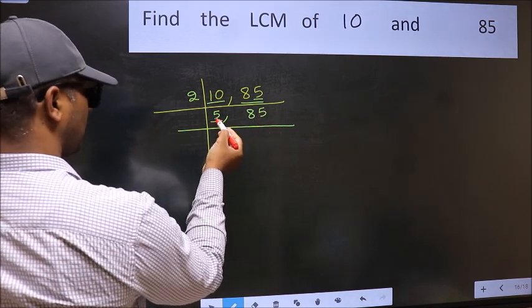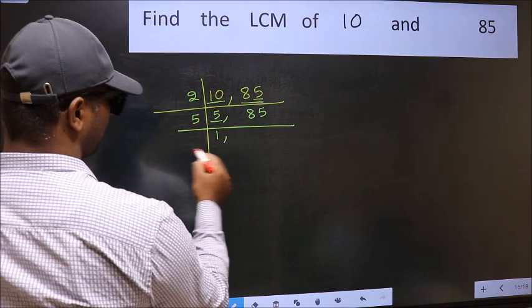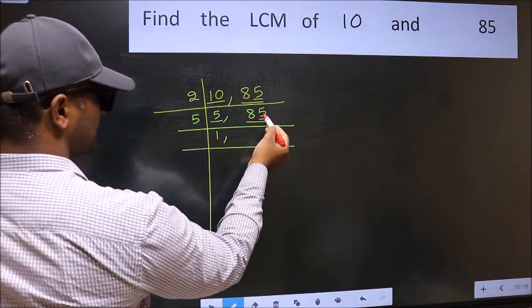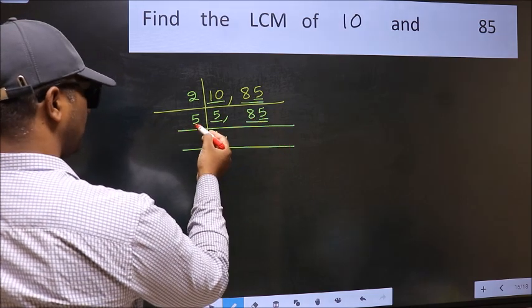Now here we have 5. 5 is a prime number. So 5 once 5. The other number, 85. Last digit 5. So this number is divisible by 5.